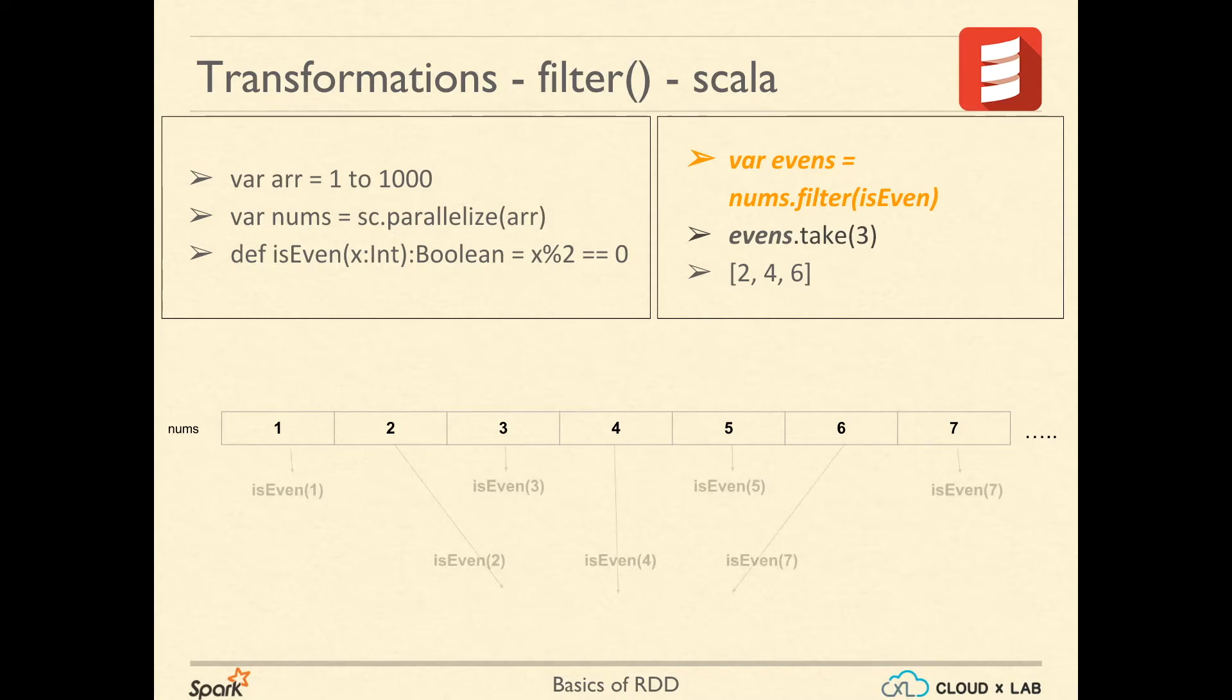In the example, is even function is called on all values of RDD one at a time. If is even function returns false, as in case of value 1, the value is not going to be kept in the output. If is even returns true, as in case of value 2, the value is going to be kept in the output.